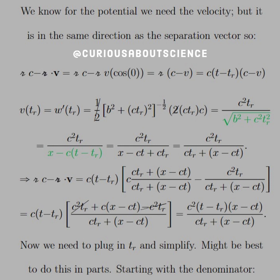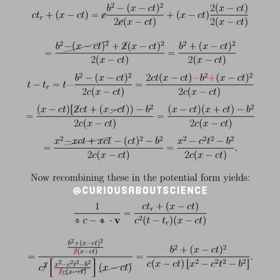And just when we thought we were making progress, we now need to plug in the retarded time and simplify. Might be best to do this in parts, so let's start with the denominator. Here we have CT_R plus X minus CT. Plug in that T_R that we found. We see that the C's cancel, no big deal. But what we're left with in the other term is that we have to, again, find a common denominator. Well, to do that, we multiply by 2 over X minus CT. We had a 2(X minus CT) squared from the right-hand side of that. And we combine that with the B squared minus the other squares. Oddly enough, or nicely enough, a factor cancels. And we're left with B squared plus (X minus CT) squared all over 2(X minus CT).